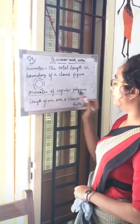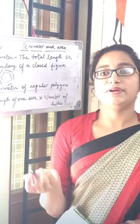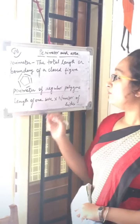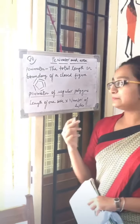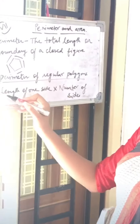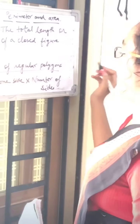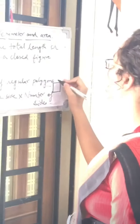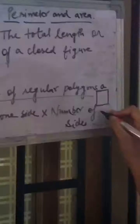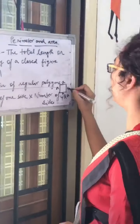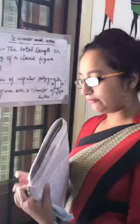Perimeter of regular polygons — what is the meaning of polygons? It means any closed figure, and regular means all sides will be equal. When we find the perimeter of regular polygons, it's very simple: we just need to add the lengths of all the sides. The formula will be length of one side multiplied by number of sides. For example, if this is a square and the length of one side is a, then the perimeter will be 4 × a, which is a + a + a + a.